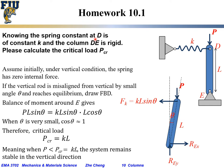Homework 10.1: Knowing the spring constant at D, this spring constant is K, and the column DE is rigid, with a load P applied vertically down along DE. We want to calculate the critical load PCR — P for load, CR for critical. So this is a column stability theoretical problem.